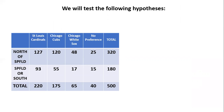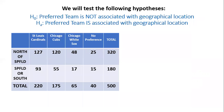Given these results, we'd like to test a pair of hypotheses. The null hypothesis is that the preferred team is not associated with geographical location. The alternative, of course, is that there is an association — that the preferred team is somehow associated with geographical location.